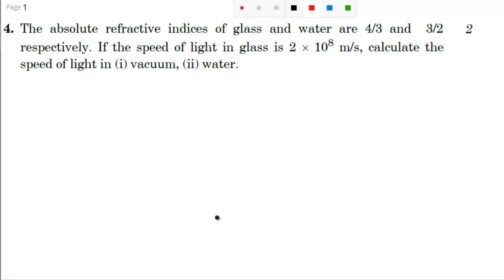Dear students, let's discuss question number four. The absolute refractive indices of glass and water are 4/3 and 3/2 respectively. If the speed of light in glass is 2×10⁸ meter per second, calculate the speed of light in vacuum and water.